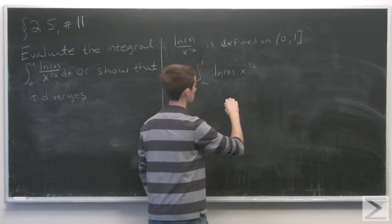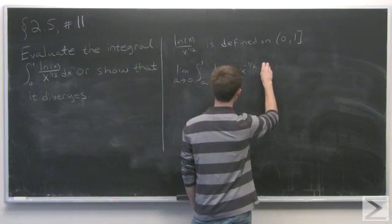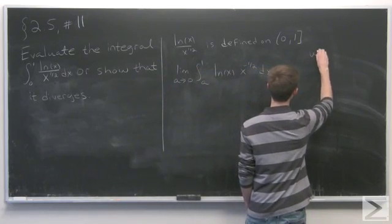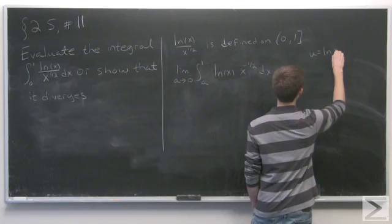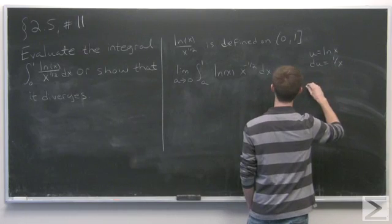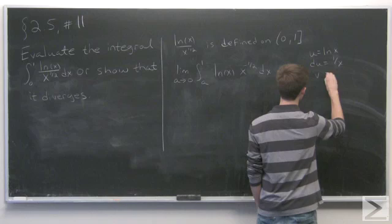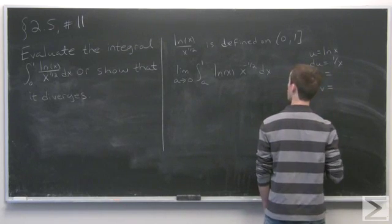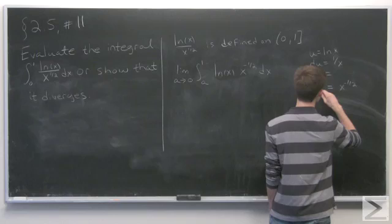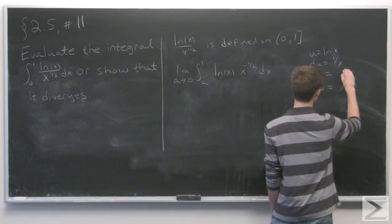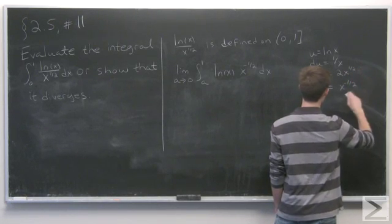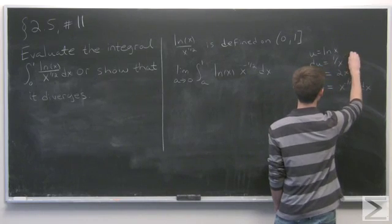We write 1 over x to the one half as x to the negative one half. Now let u equal the natural log of x, so that du equals 1 over x dx. And if we let dv equal x to the negative one half dx, then v is going to equal 2x to the one half.